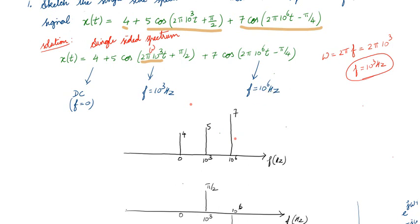So what are the frequency components present in signal x(t)? We have a frequency component at 0 Hz, a component at 10³ Hz, and a component at 10⁶ Hz. What about the magnitudes? The magnitude is 4 at 0 Hz, the magnitude is 5 at 10³ Hz, and the magnitude is 7 at 10⁶ Hz. This is called the magnitude spectrum.